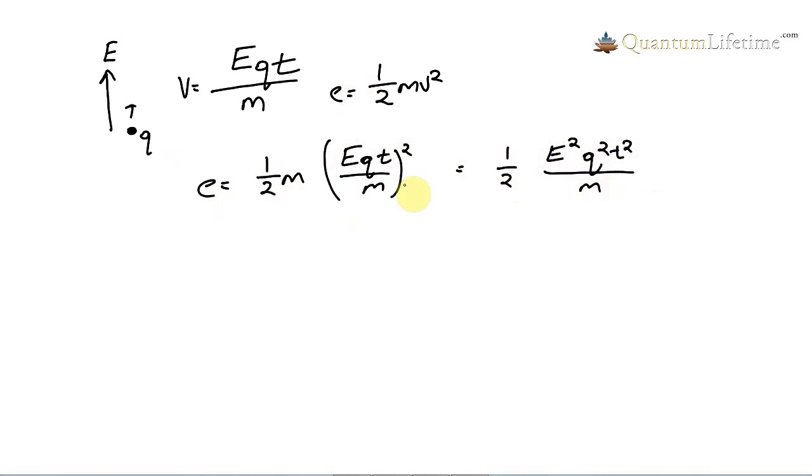Now the point I want to make here is that the energy after time t is proportional to the square of the electric field strength. It's not directly proportional to the electric field strength, but to the square of it.